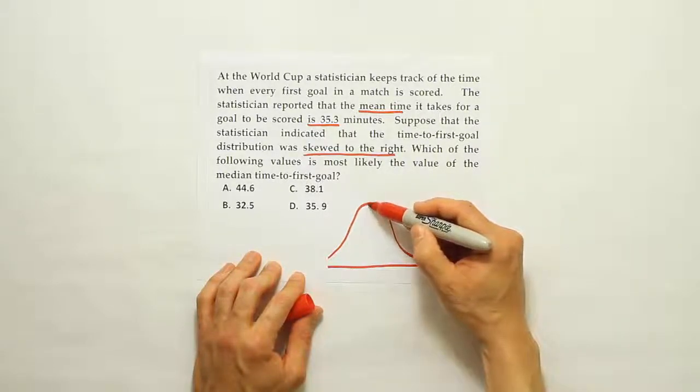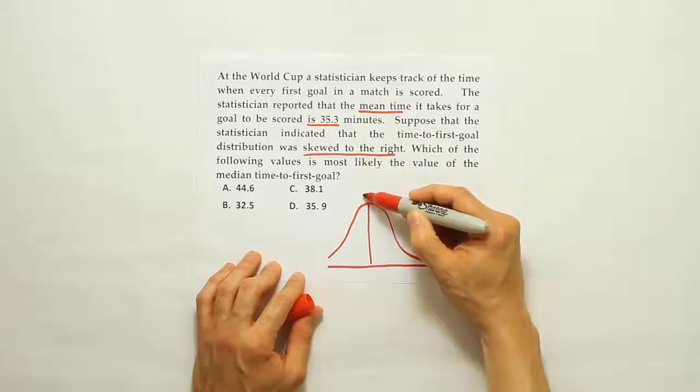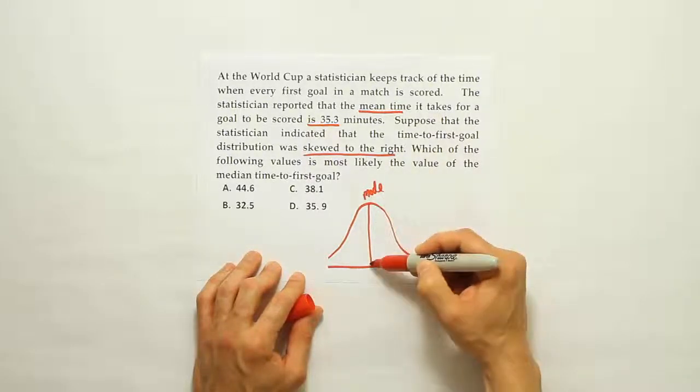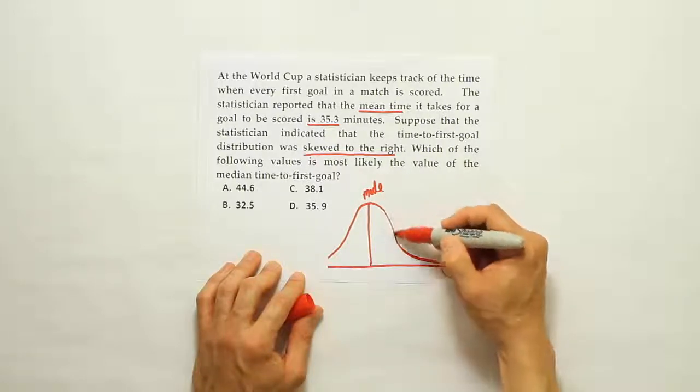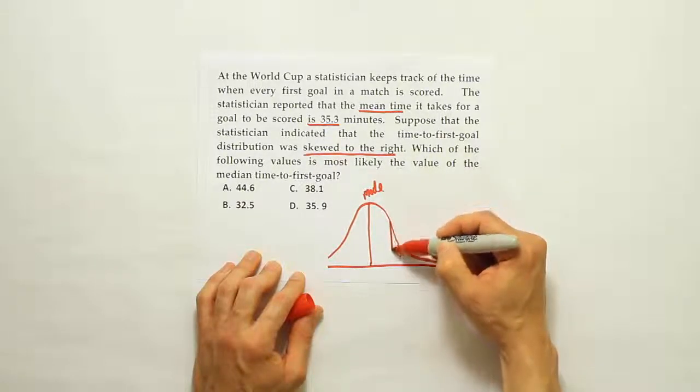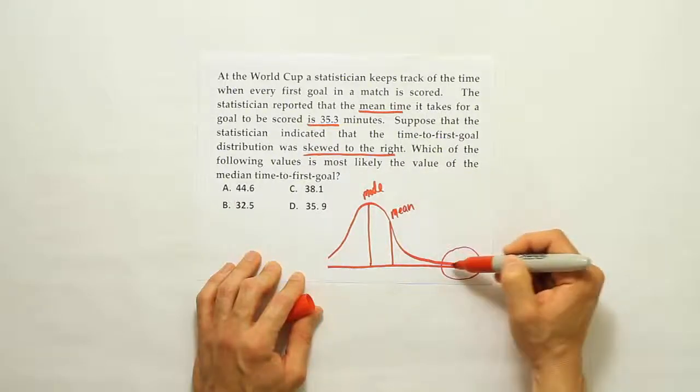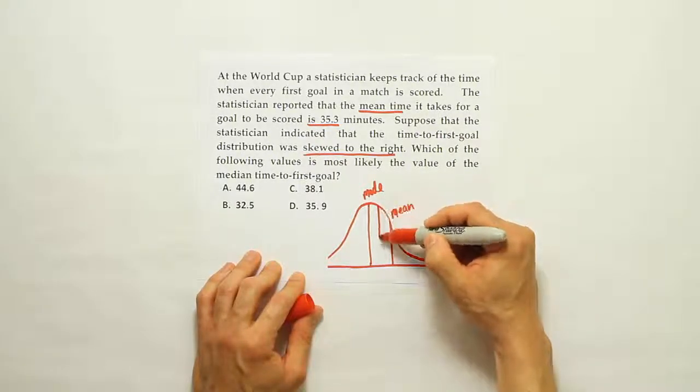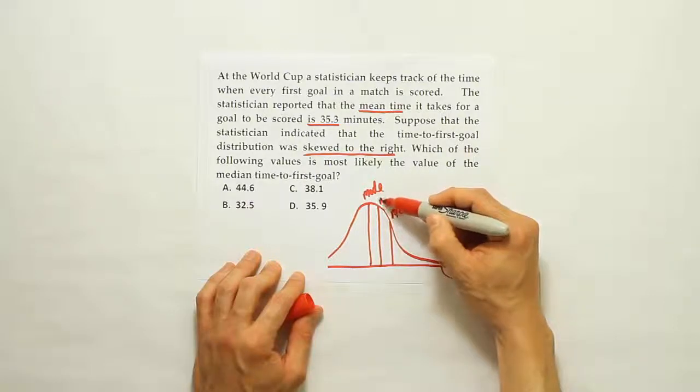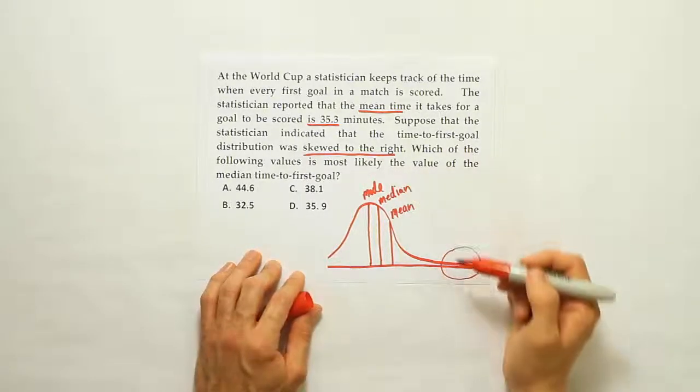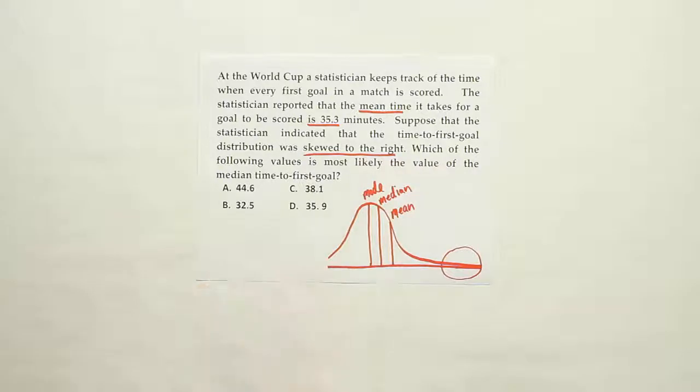So the mode is always where the bump is in these drawings, because that's the most repeated value. And then you have another number, let's call it here, which is going to be the mean. It's the value that's pulled closest to the tail. And then in between the two of those, you always have the median. So this is the proper drawing for a right-skewed distribution.